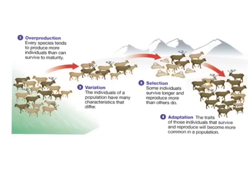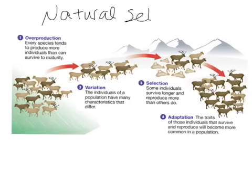We're going to start off our unit with natural selection. Natural selection is sometimes referred to as survival of the fittest. There are a couple of things essentially required for natural selection to happen — four criteria that need to be met for natural selection to occur.